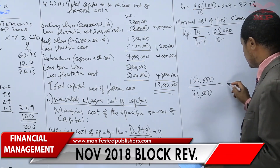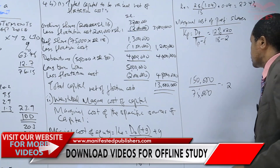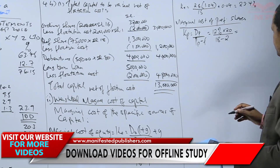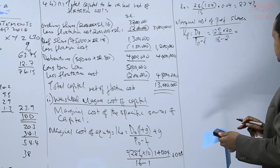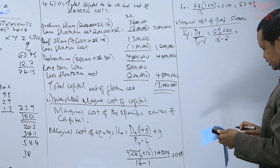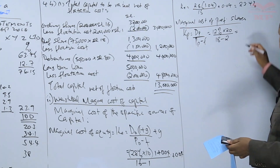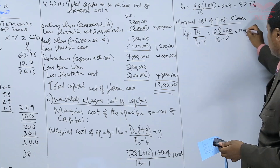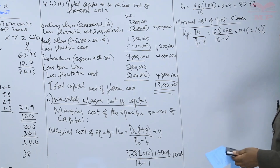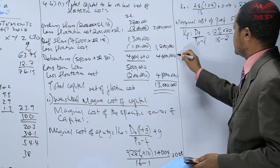This gives us the flotation cost, which is equal to 2 shillings. So with that, we can determine the cost of preferred shares: 12% times 20, divided by 16. This is equal to 0.15, which is equal to 15%. That is the marginal cost of preference shares.